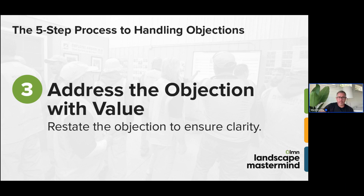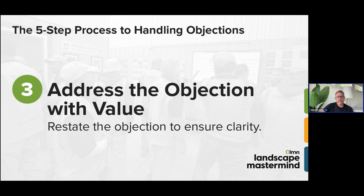When we restate the problem, we need to put some value to it. For a commercial snow plowing contract where they say my price is significantly more than competitors, I need to explain where the value is coming from — why we're more money — and state exactly what the value is. We assess whether it's worth them spending more to avoid business interruption, accidents, slip and fall claims, or shipment delays from their loading docks.